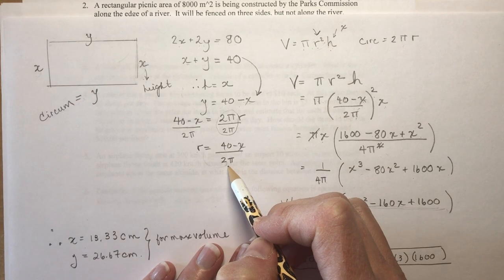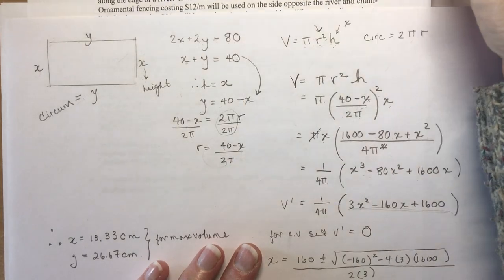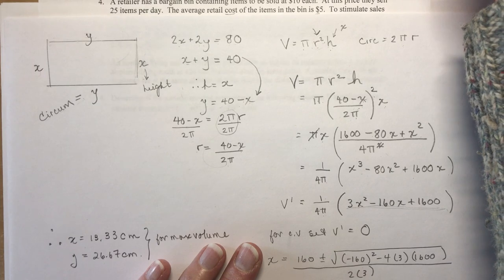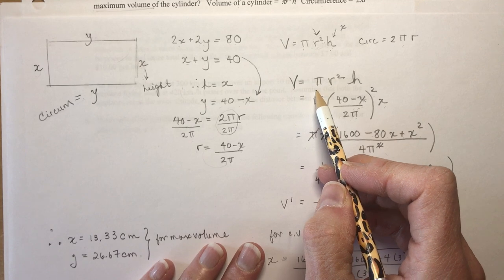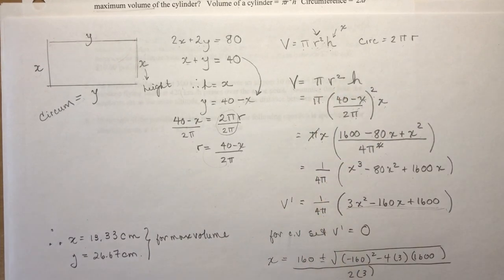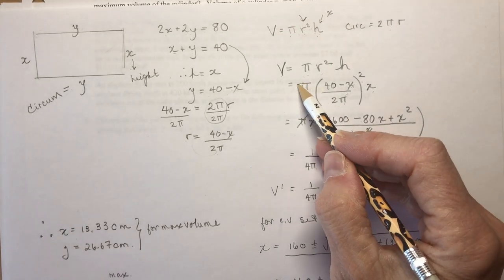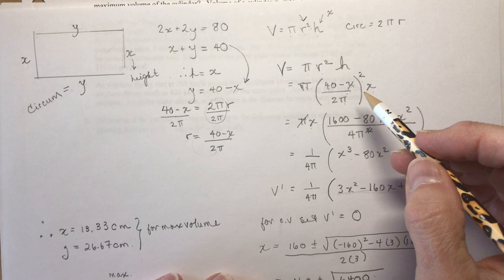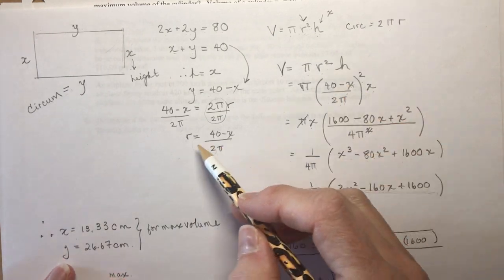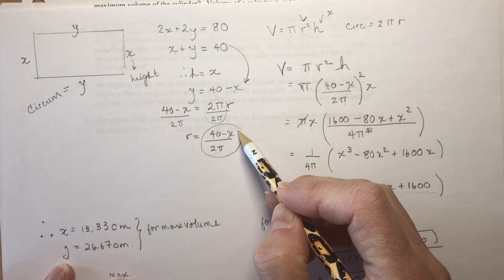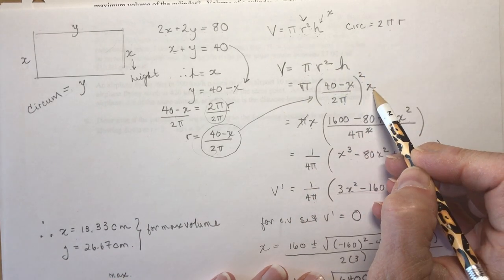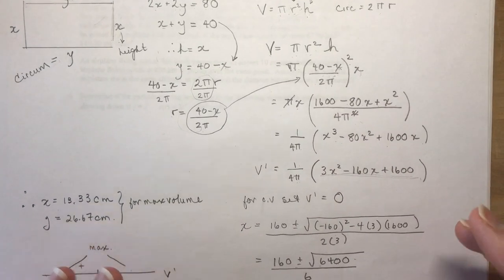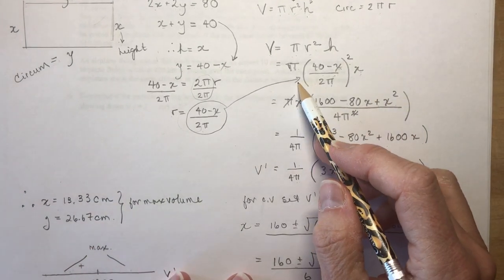Now back to the question. It says that I'm trying to maximize the volume of the cylinder. So here's my volume equation: πR²H. Pi is pi, it's a constant, so I'm going to leave that there. And then I have R squared, so I take my R from here and I plug it in over here, and I'm going to square it and multiply it by the height which is X.